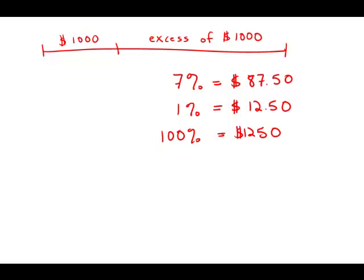So if the excess above $1,000 is $1,250, that means we have to add the original $1,000. So that means that the total price is $2,250. And that is answer choice C. Thank you.